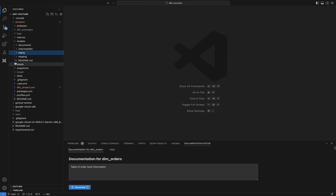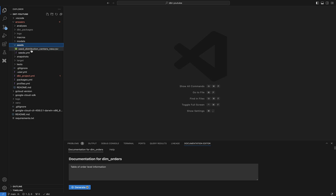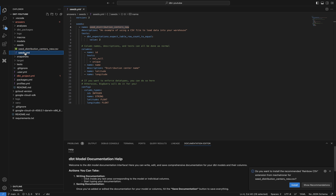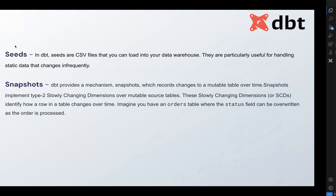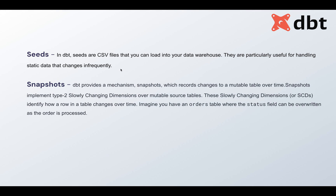Next are seeds. On the left-hand side there's a seeds folder. Seeds are CSV files that you can place in this folder and load into your data warehouse. They are used for data that doesn't change frequently — essentially static lookup tables in the form of CSV files.